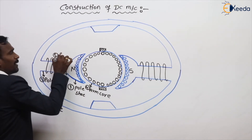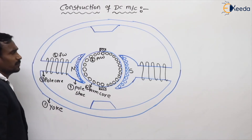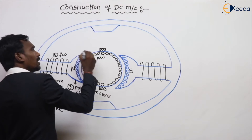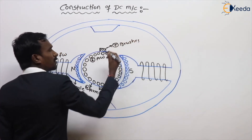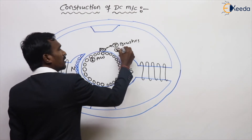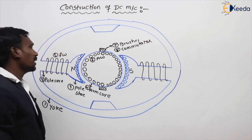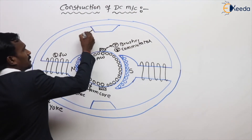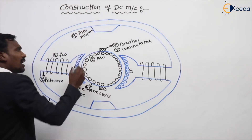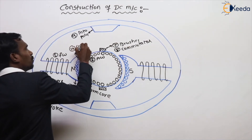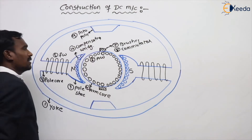Seventh, brushes. Eighth, commutator — inbuilt, nothing but split ring. Ninth, interpoles. And tenth, compensating winding. These are the ten parts of my DC machine.